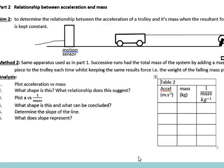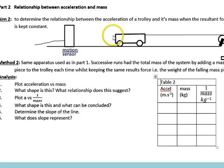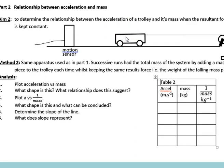Part 2. We have a similar setup, but this time in successive runs we keep the falling mass piece the same. So the resultant force remains fairly constant, but we add additional mass pieces onto the trolley. And as it gets more massive, let's see what happens to the acceleration.